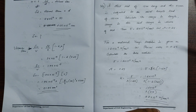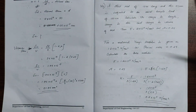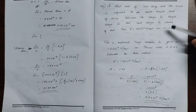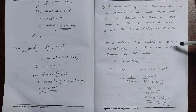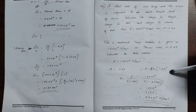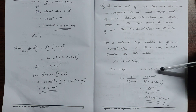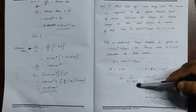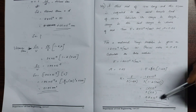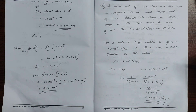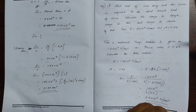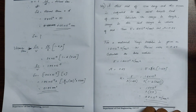Using the relation E equals 3K into 1 minus 2 mu, we substitute the values. E equals 3K(1 minus 2 mu). Solving for K, the result is approximately 0.8 into 10 to the power 5 N per m squared.